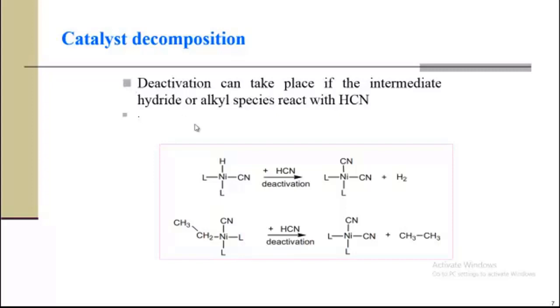Catalyst decomposition. Actually, deactivation can take place if the intermediate hydride or alkyl species react with HCN. In the first step, when we add HCN, it may be that another molecule of HCN reacts with the ligand and deactivation takes place, and dicyanation will take place. So in this way we will not get alkyl nitrile. The other step, at the fourth position, when alkene is added with nickel, it is possible that HCN will deactivate this catalyst and we will get alkane other than alkyl nitrile. So these are the two drawbacks which take place.